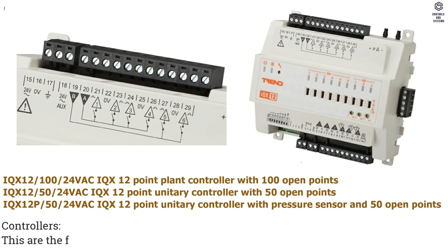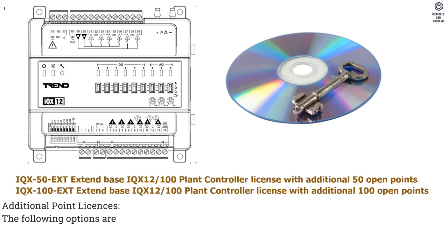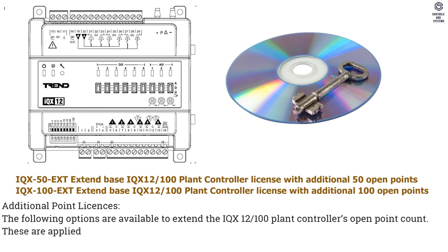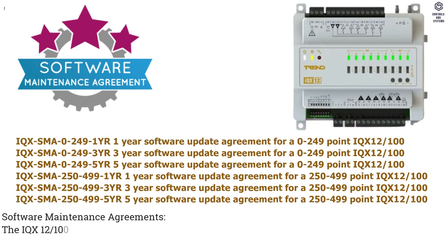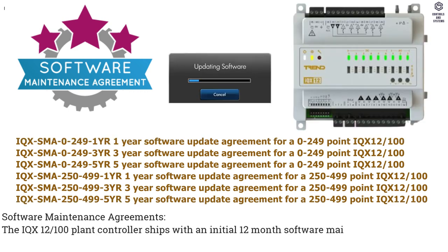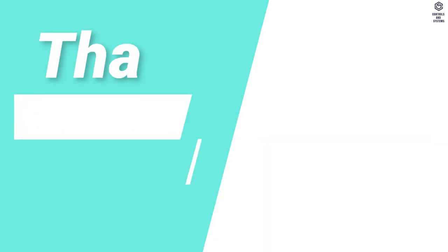Order Codes — Controllers: the following options are available in controller variance endpoints. Expansion Modules: options are available in IQXIO20 and IQXIO7 devices. Additional Point Licenses: options are available to extend the IQX12 plant controller open point count; these are applied cumulatively — for example, purchasing both an IQX50 AXT and an IQX100 AXT license will provide an additional 150 points. Software Maintenance Agreements: the IQX12 plant controller ships with an initial 12-month software maintenance agreement, which can be extended by purchasing one of the following upgrades.